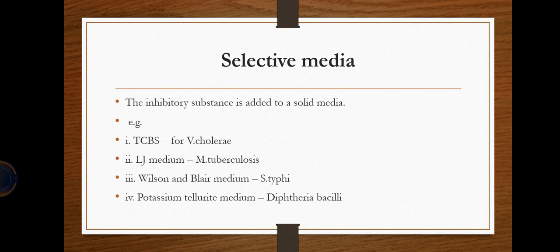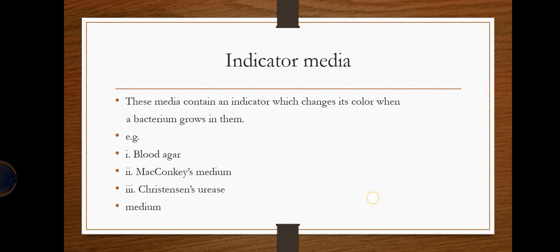Selective media also contain inhibitory substances added to solid medium. Examples include TCBS for Vibrio cholerae, LJ medium for Mycobacterium tuberculosis, Wilson Blair medium for Salmonella typhi, and potassium tellurite medium for diphtheria bacilli.